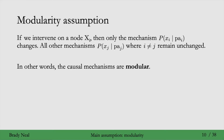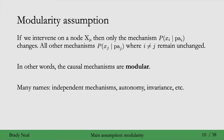This assumption goes by many names, one of which is independent mechanisms — the mechanisms are independent in the sense that changing one doesn't change any of the others. Autonomy is another one; the mechanisms are autonomous in the sense that they don't need to rely on each other. And another name is invariance, so all mechanisms are invariant to changes in any of the other mechanisms.